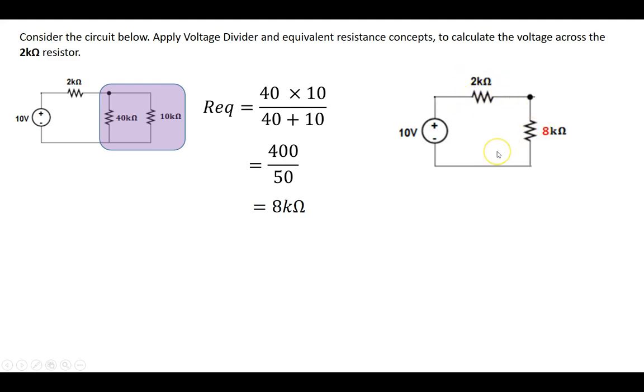So 2 divided by 2 plus 8 times the overall voltage I'm looking at, 10. So it leads me to the voltage across the 2 kOhm resistor to be 2 over 10 times 10, which leads me to 2 volts.